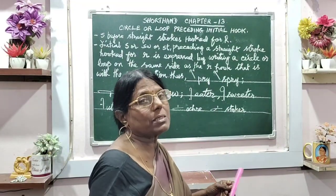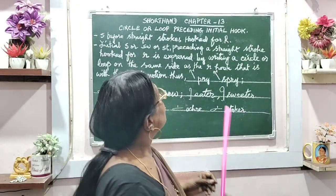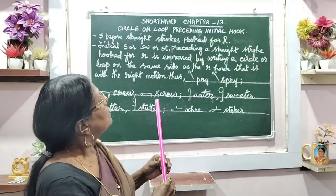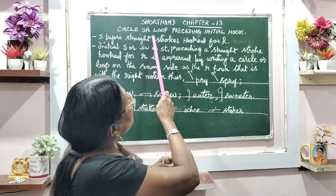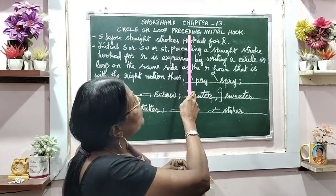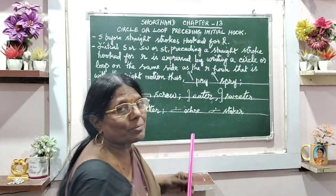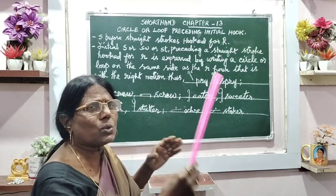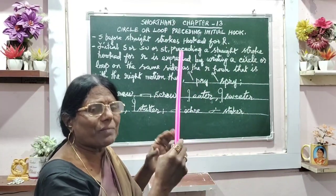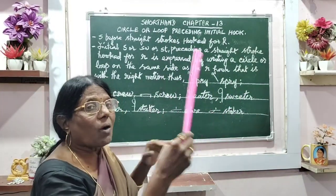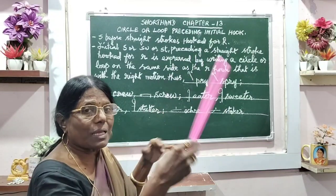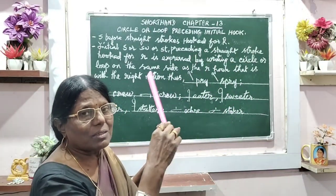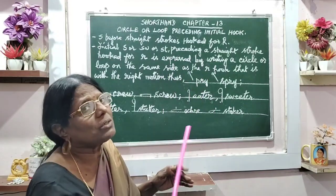Welcome to my Shorthand class. We are going to have Chapter 13, that is circle or loop preceding initial hook. We have come across circle, hook, loop, everything. Now all these are going to be mixed here and there and the system of writing will be taught.